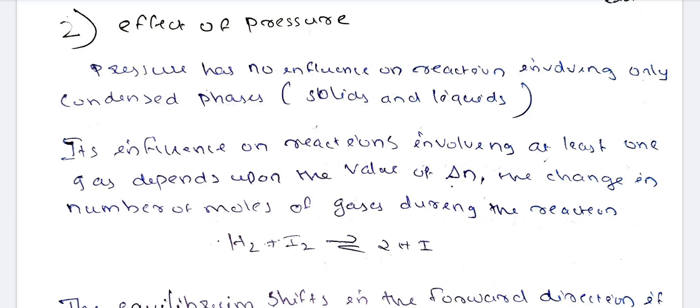This is the effect of pressure and its involvement. It has influence on reactions involving at least one gas, and it depends upon the value of delta N — the change in the number of moles of gas during the reaction. Whatever we have in the gaseous phase, pressure is important for those reactants or products.